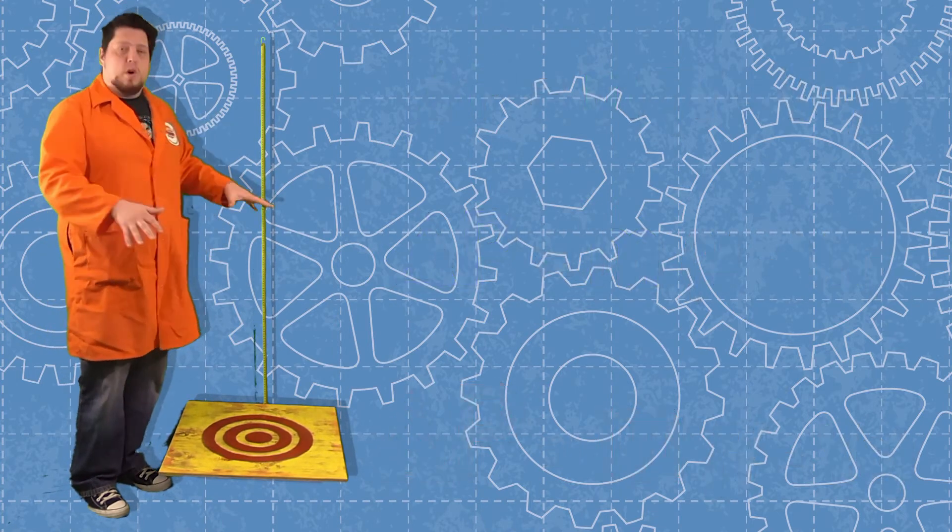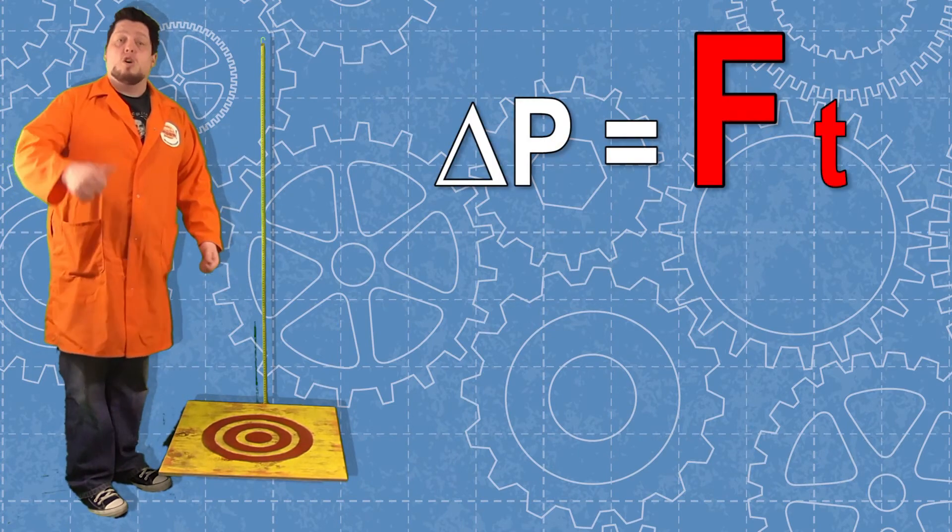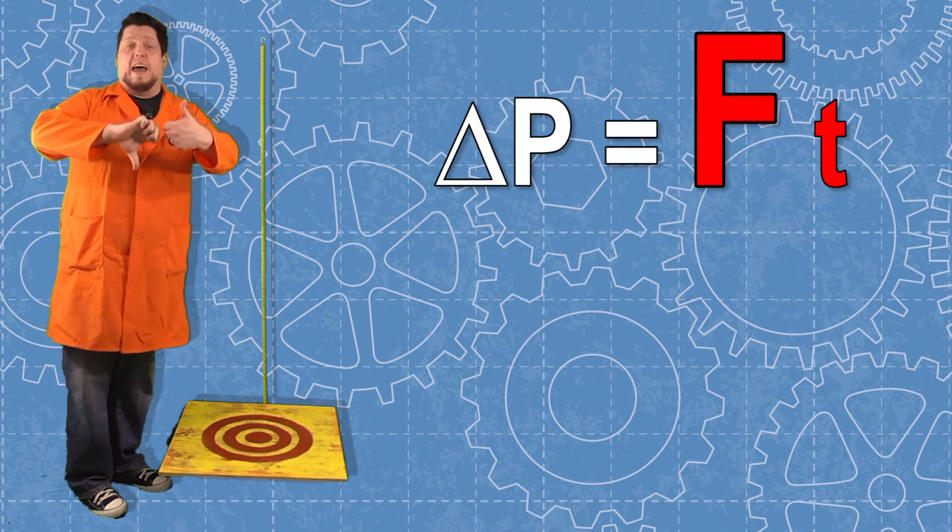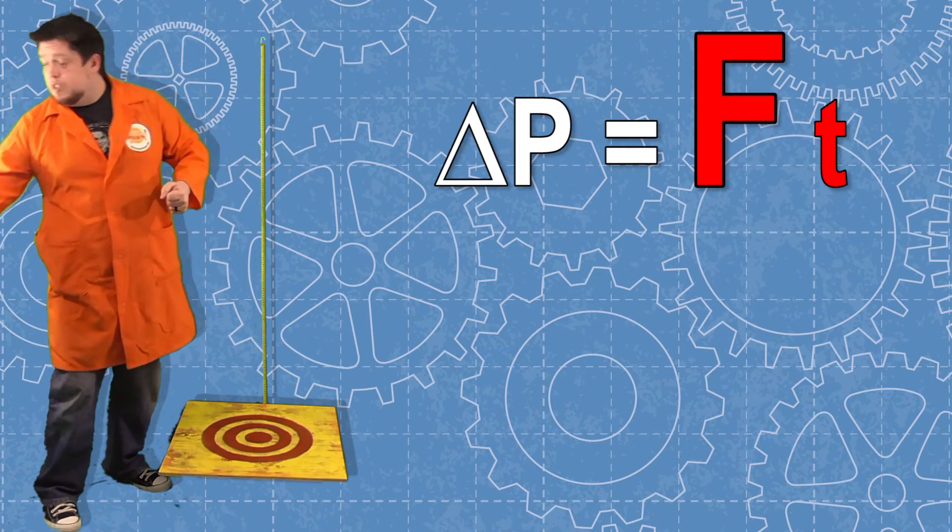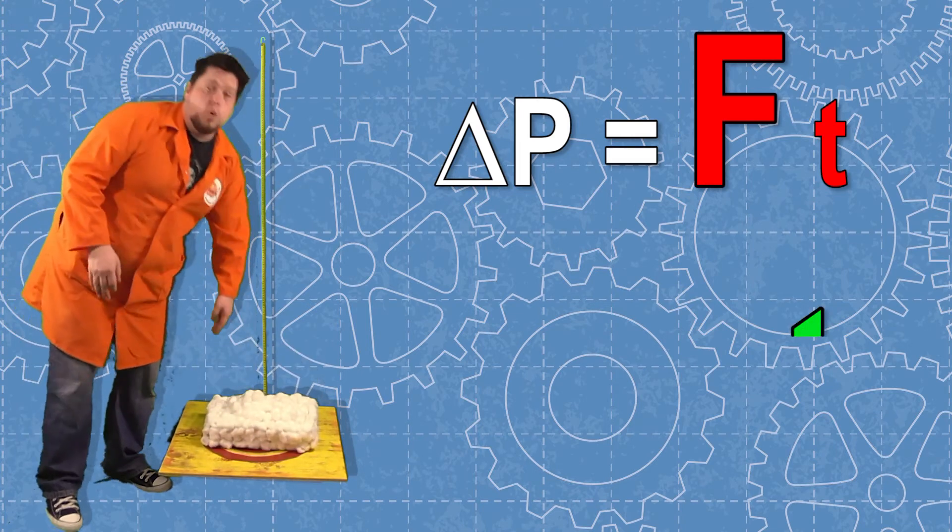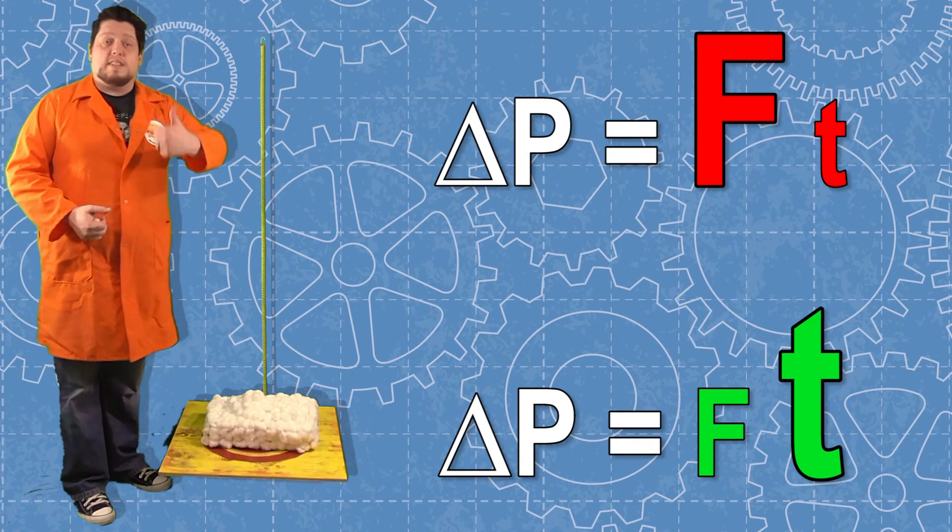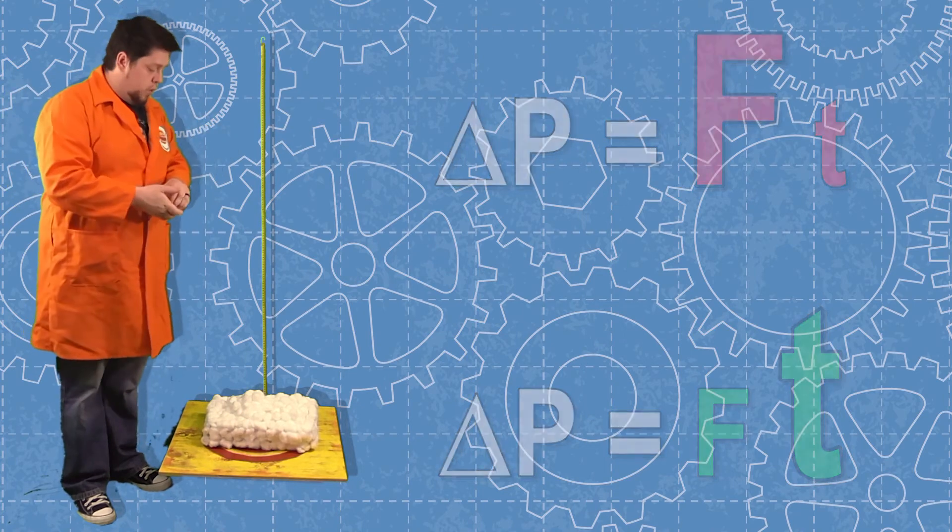We can spread out that force. If it just hits the platform, short amount of time, big amount of force acting on that egg. But if we change the materials that it's landing on, cotton balls are going to slow down the landing. Increased time, decreased force.